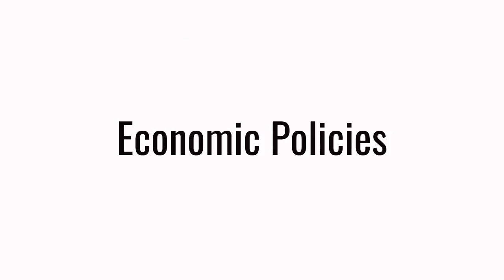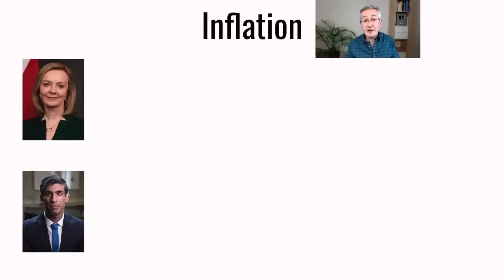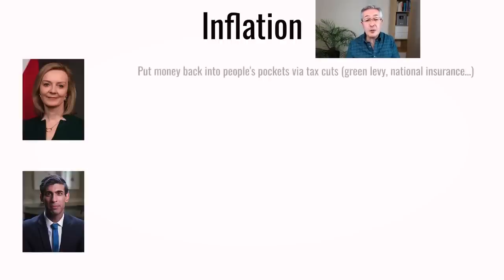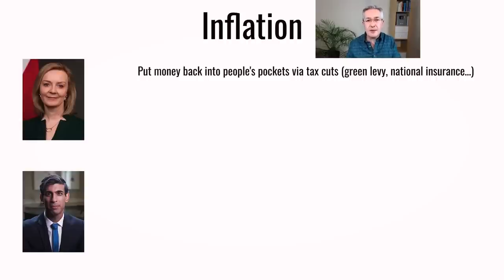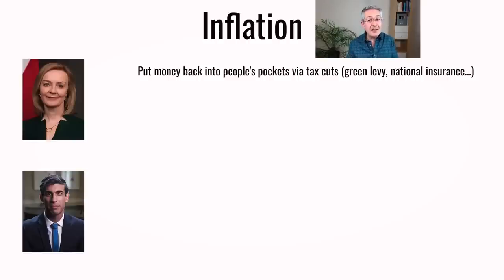Now let's look at the candidates' economic policies, starting with inflation. Liz Truss says she wants to put money back into people's pockets via tax cuts — for example, cutting the increase in national insurance. Because that's based on salaries, it will tend to benefit the most wealthy more than the poorest. To address short-term energy bills, she's going to cut the green levy. What I don't like about the national insurance cut is that it is inflationary: if you give people more disposable income, they'll go out and spend, increasing demand, which in turn may push up prices. This could actually add fuel to the inflationary fire.